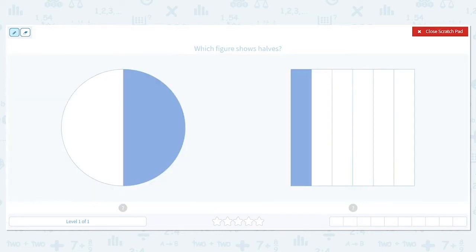So our first question says, which figure shows halves? Halves means I have two equal pieces. So looking at this first one, what do I have? Do I have two equal pieces? Yes. So we would say this one is split into halves.